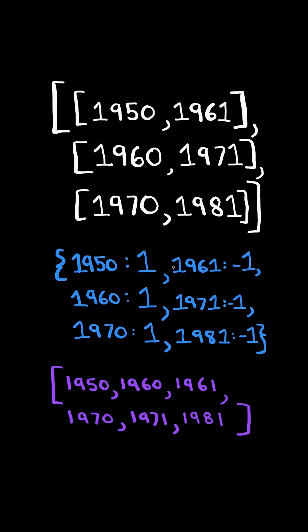We then sort the list of birth and death years and keep track of the max population, max year, and the running total of the current population.